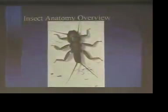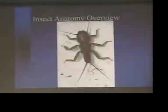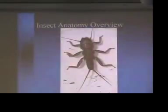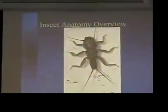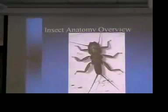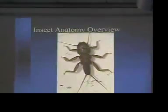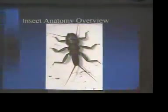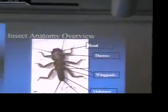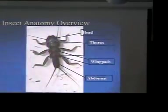Does anybody know the three major parts of every insect? Head. Thorax. Abdomen. What's the middle part? It starts with a T. Thorax — not torso. Head, thorax, abdomen. Every insect has them.